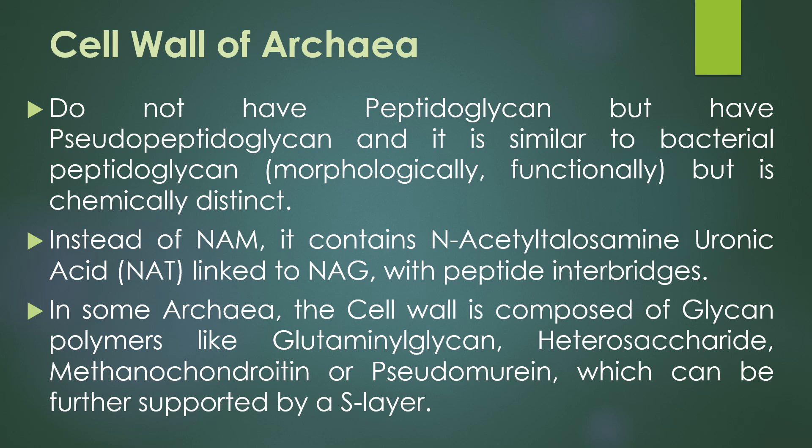In archaea, instead of NAAM (N-acetyl muramic acid), the cell wall contains NAT (N-acetyl talosamine uronic acid), which is linked to NAG (N-acetyl glucosamine). Both NAT and NAG are linked with peptide interbridges to increase the strength of the cell wall.